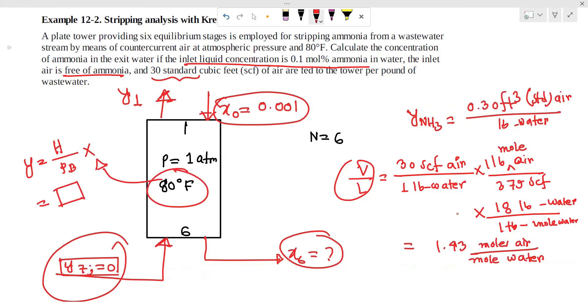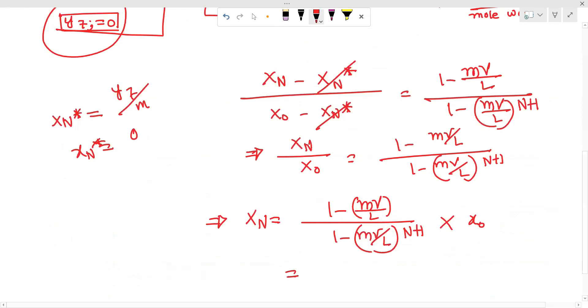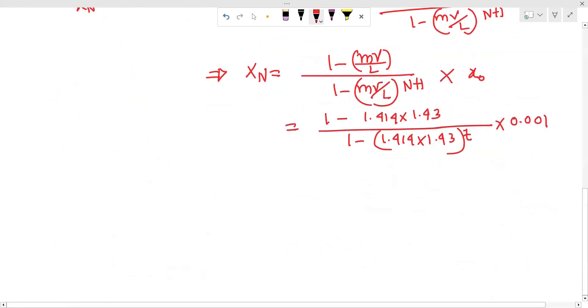mV by L is equal to 1 minus 1.414 into 1.43. n plus 1 is equal to 7. x0 is equal to 0.001. So we can see the xn value. xn value is equal to 7.45 into 10 to the inverse.